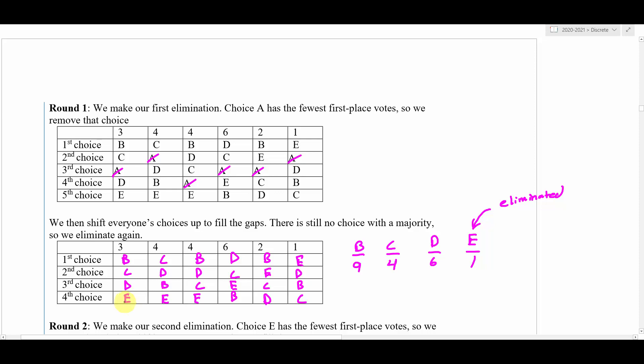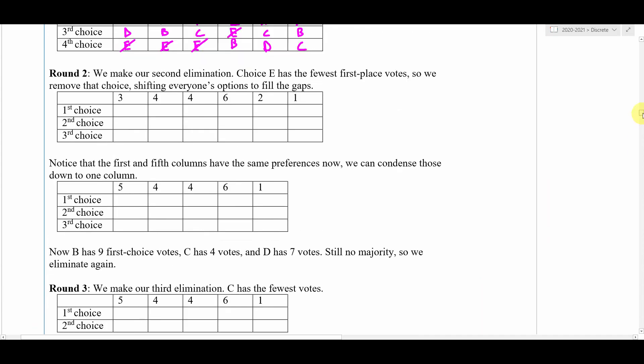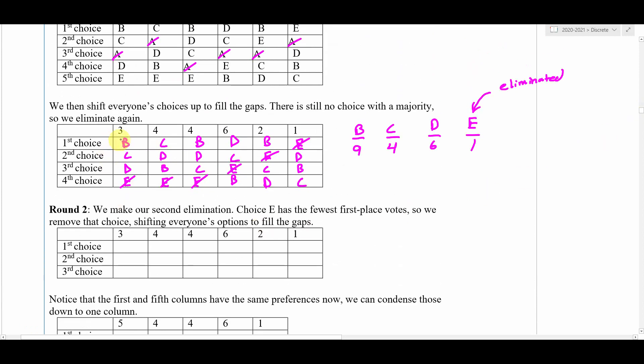Then we go through our preference ballot and we cross off all the E's, and then we move everybody up. This column is going to be B, C, D now, this one will be C, D, B, this one will be B, D, C.